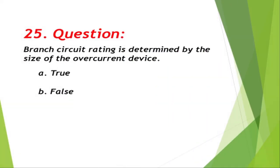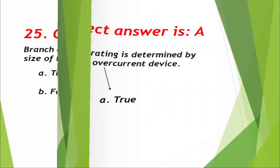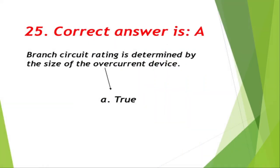Question number 25: Branch circuit rating is determined by the size of the overcurrent device. A. True, B. False. Correct answer is A, true.